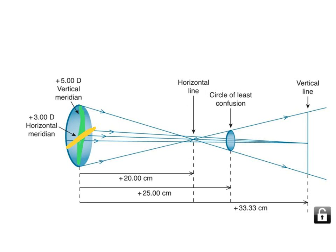The power of the vertical meridian is different from the power of the horizontal meridian. What happens is that the vertical meridian forms a horizontal focal line. The horizontal meridian forms a vertical focal line. Again, no point.